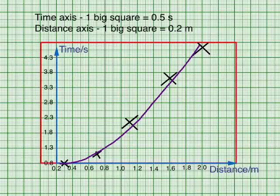This is the graph plotted with a scale of 1 big square is equal to 0.5 seconds for the time axis. It is indeed of good proper size. It covers more than half of the available graph area.